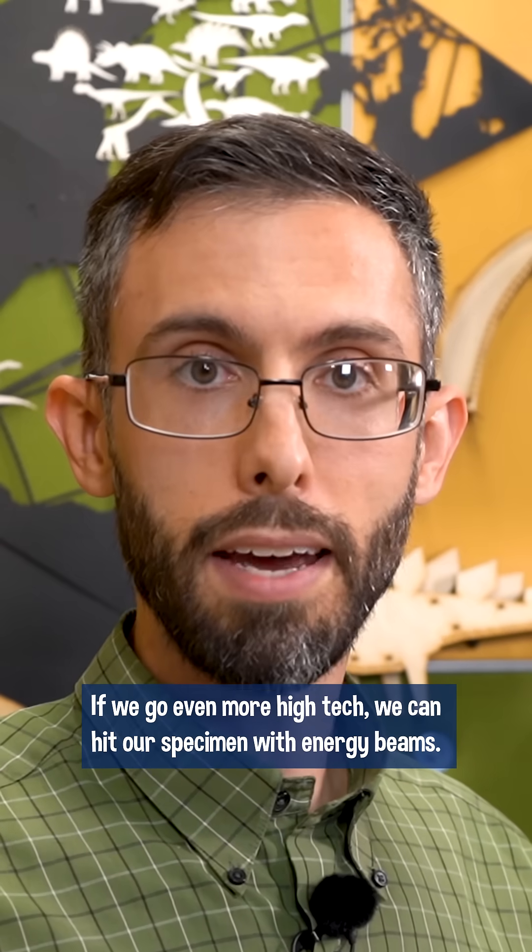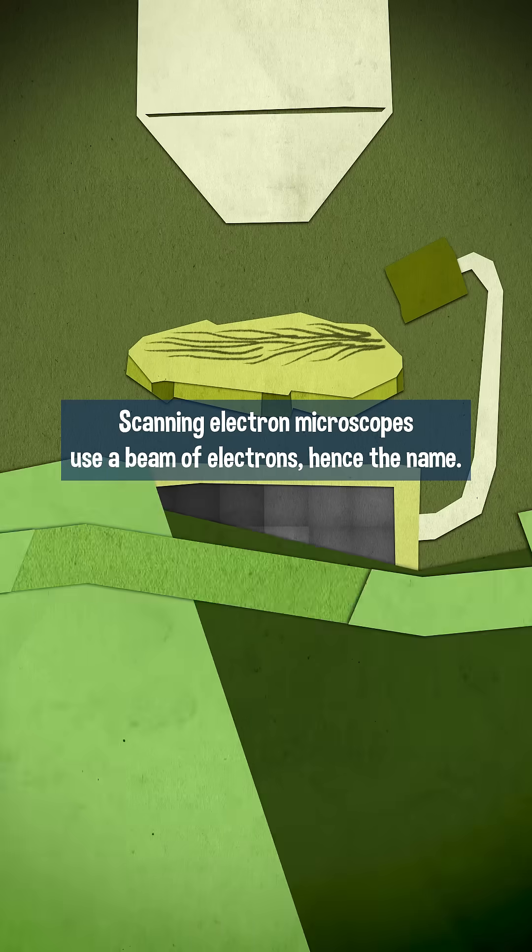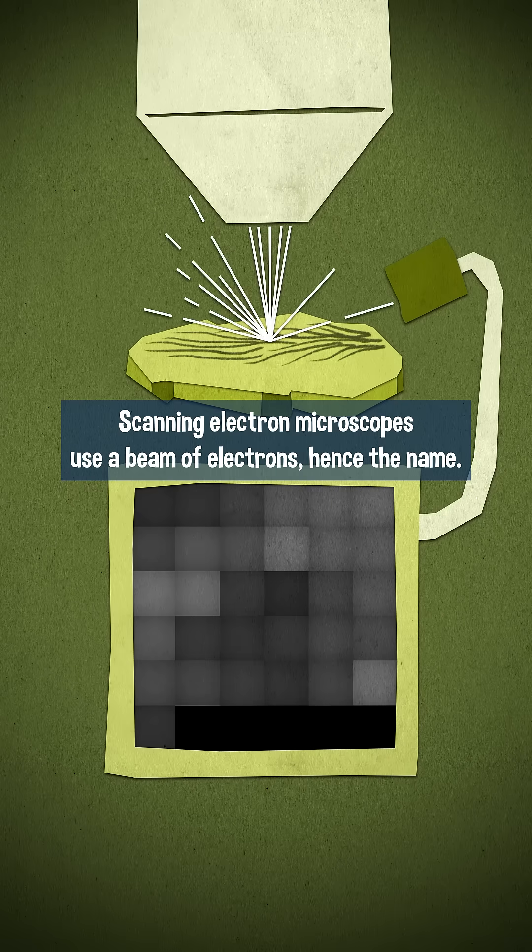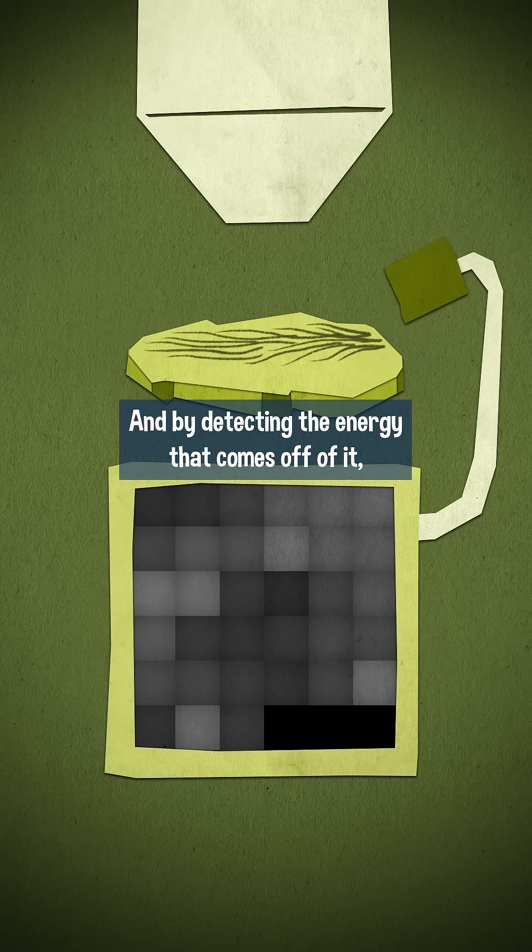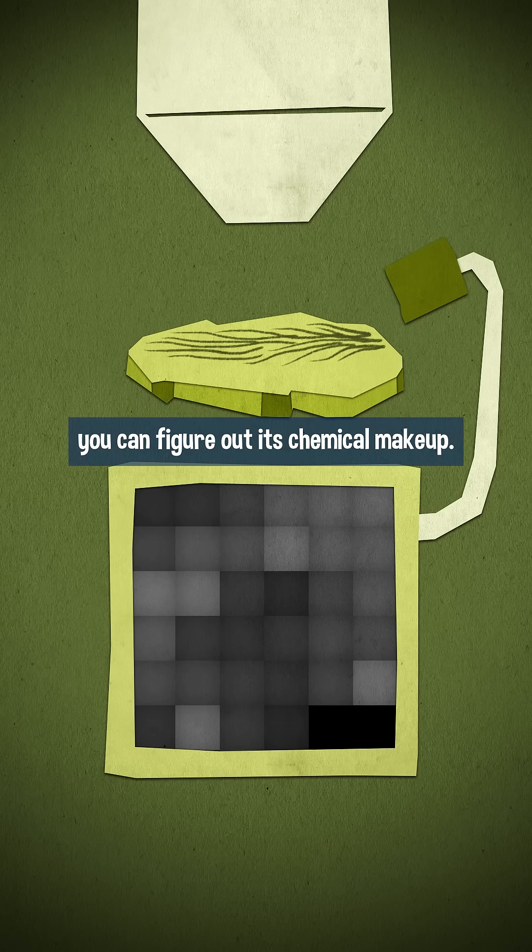If we go even more high tech, we can hit our specimen with energy beams. Scanning electron microscopes use a beam of electrons, hence the name, and by detecting the energy that comes off of it, you can figure out its chemical makeup.